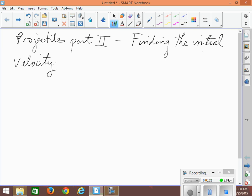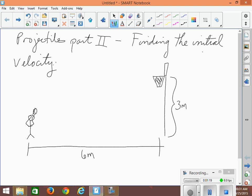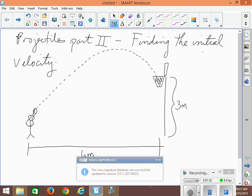Alright, let's draw ourselves a little picture. Let's imagine a person standing here. Actually, their arms kind of go up like this because they would be holding a basketball. And they're going to be shooting that basketball at a basketball net some distance away. There's the net.